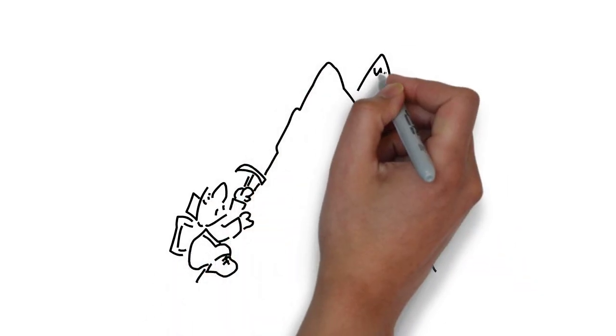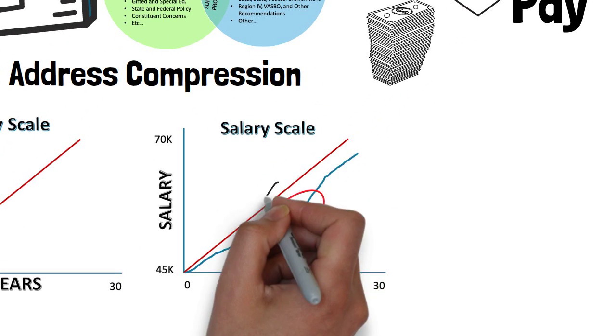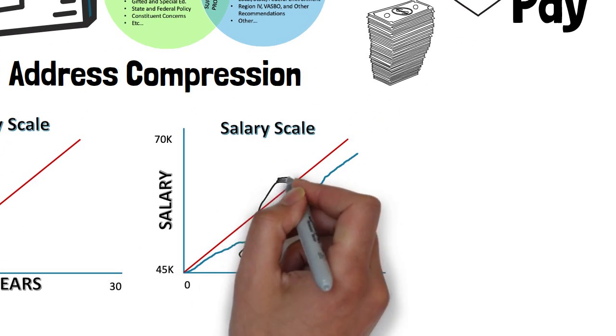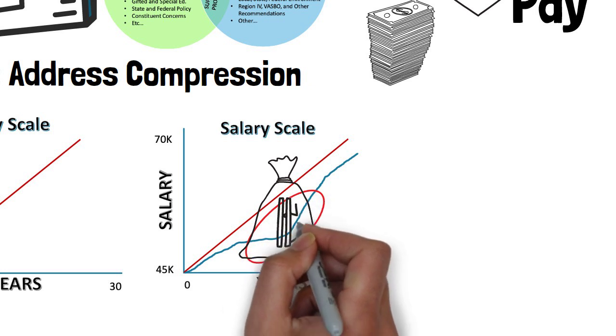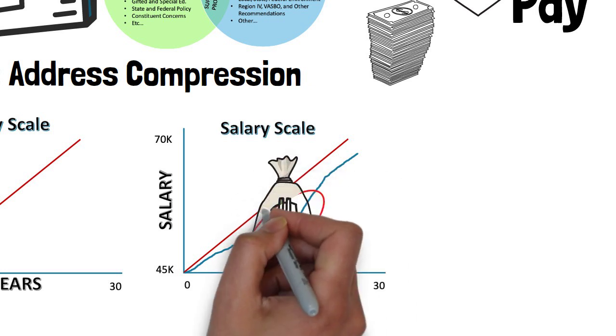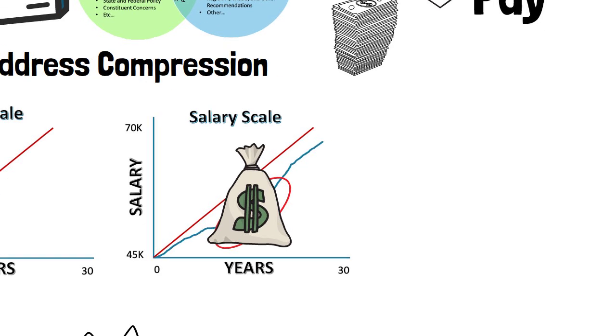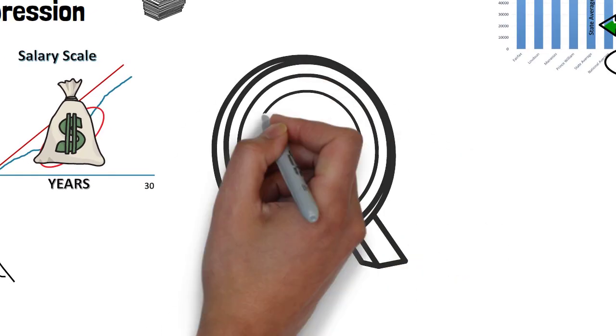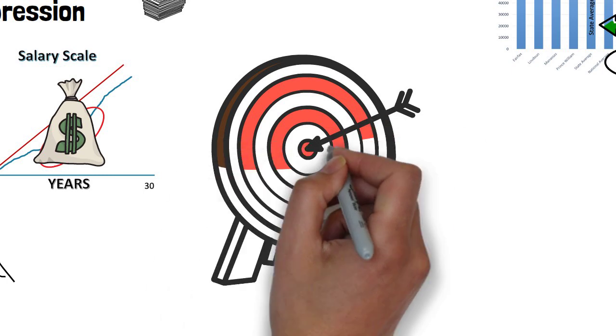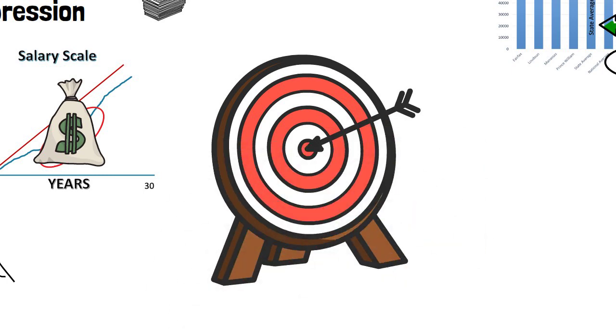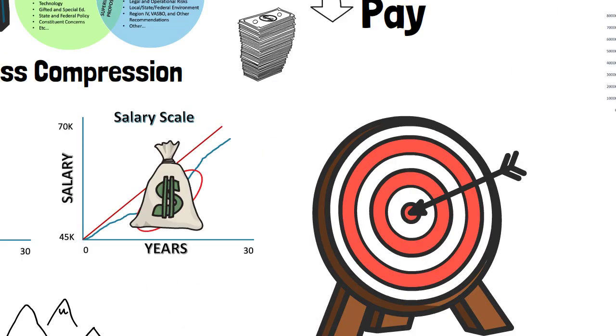The board began to address compression three years ago, but now we have a real opportunity to address it. Now is the time to fix teacher compression once and for all. Compression can't be fixed by providing an across the board salary increase. Rather, compression is fixed by targeting the compressed segments of the scale.